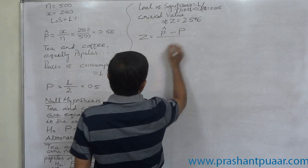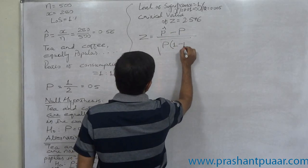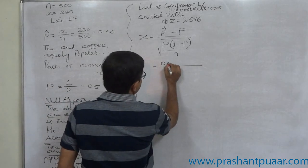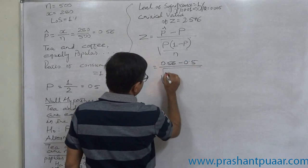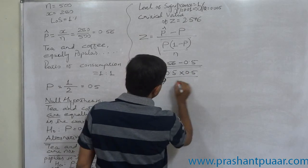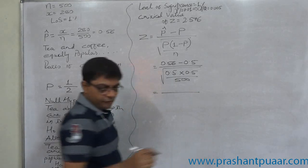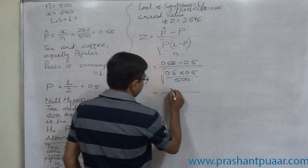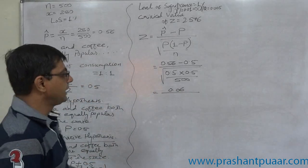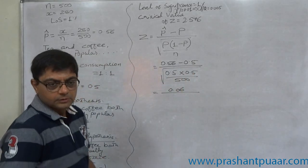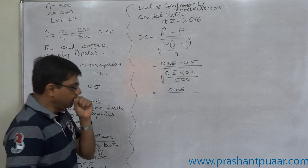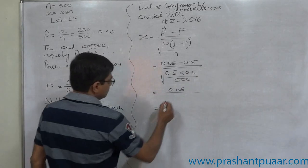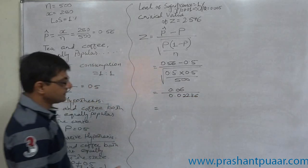The Z formula is: Z = (p-cap minus capital P) divided by the square root of [capital P times (1 minus capital P) divided by 500]. Be careful — the denominator involves very low values and a square root. Calculate: 0.5 × 0.5 ÷ 500, then take the square root, which gives 0.02236 (or 0.0224).